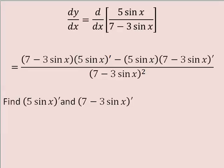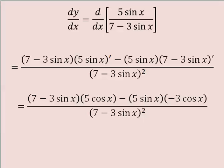Find the derivative of 5 sine x, and find the derivative of 7 minus 3 sine x. The derivative of 5 sine x is 5 cosine x. The derivative of 7 minus 3 sine x is negative 3 cosine x.